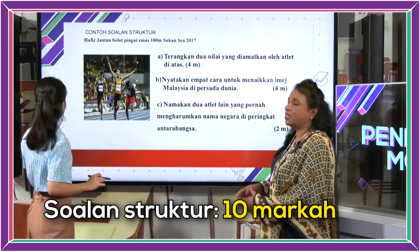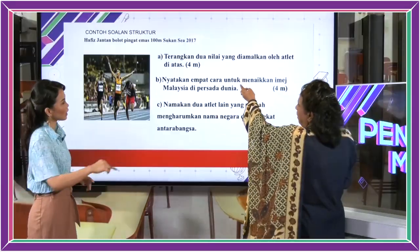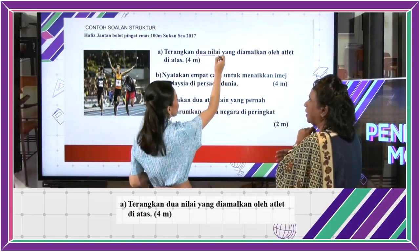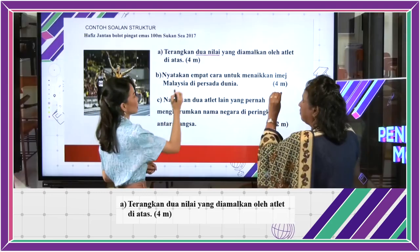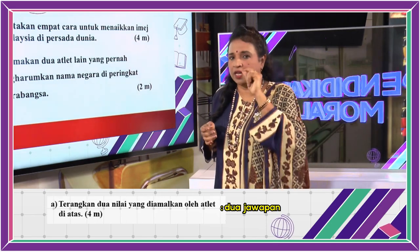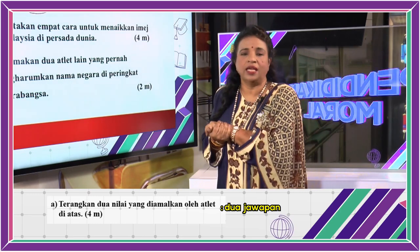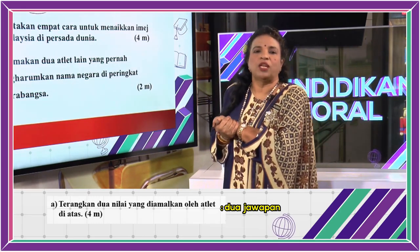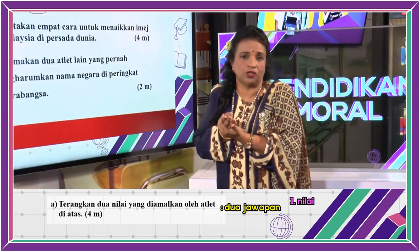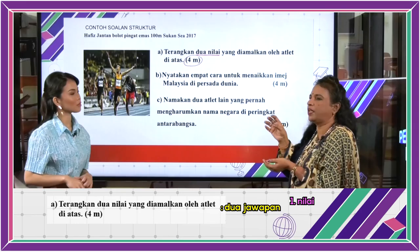Struktur is always markah 10. Let's see the part of the markah. Let's say two values — dua nilai, but markahnya 4. Bila dua nilai, empat markah, pelajar perlu membuat dua jawapan dan ruang jawapan memang diberikan dua: Roman 1 dan Roman 2. Untuk mendapat dua markah untuk satu nilai, ayat pertama, murid menulis nilai apa — contohnya dalam soalan ini, nilai kerajinan atau nilai berdikari. Satu perkataan saja, tak payah buat ayat penuh.